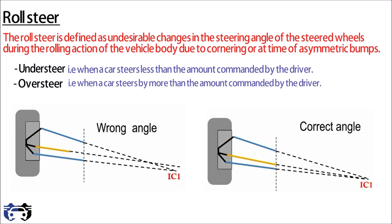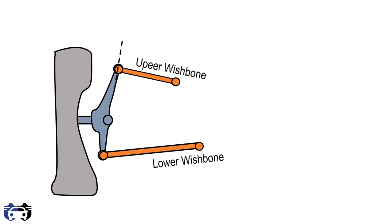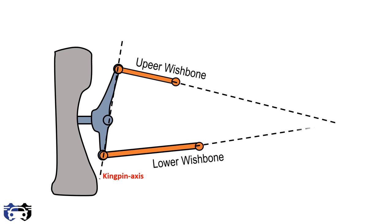Here is the front left tire, the knuckle, and the upper and lower wishbones. The axis passing from the outer joint of the upper and lower wishbone is called the kingpin axis. If we extend an imaginary line from the upper wishbone and intersect it with the imaginary line from the lower wishbone, we get the instantaneous center (IC), which is the point about which the suspension control arms rotate at a particular instant.